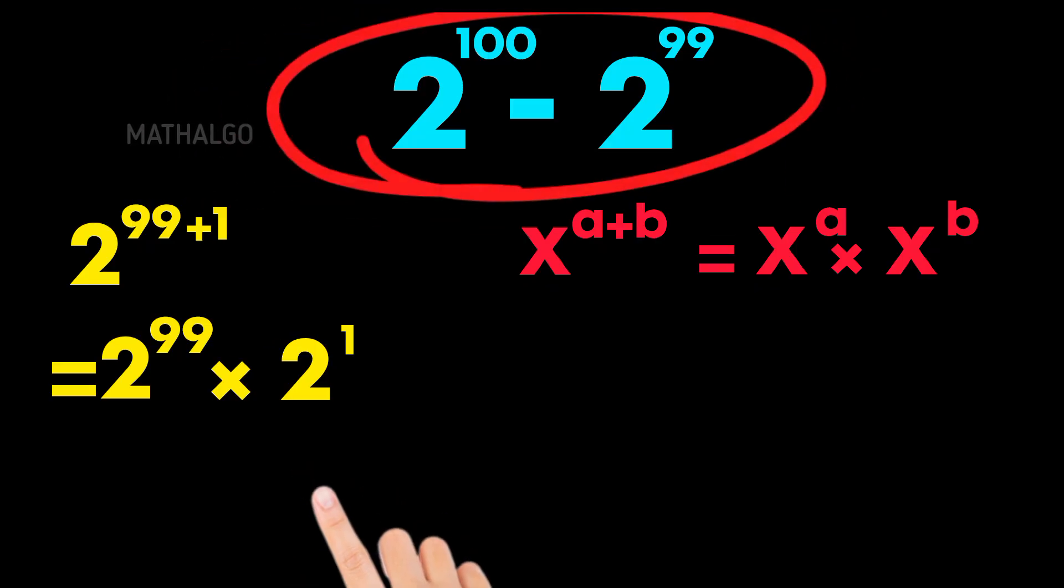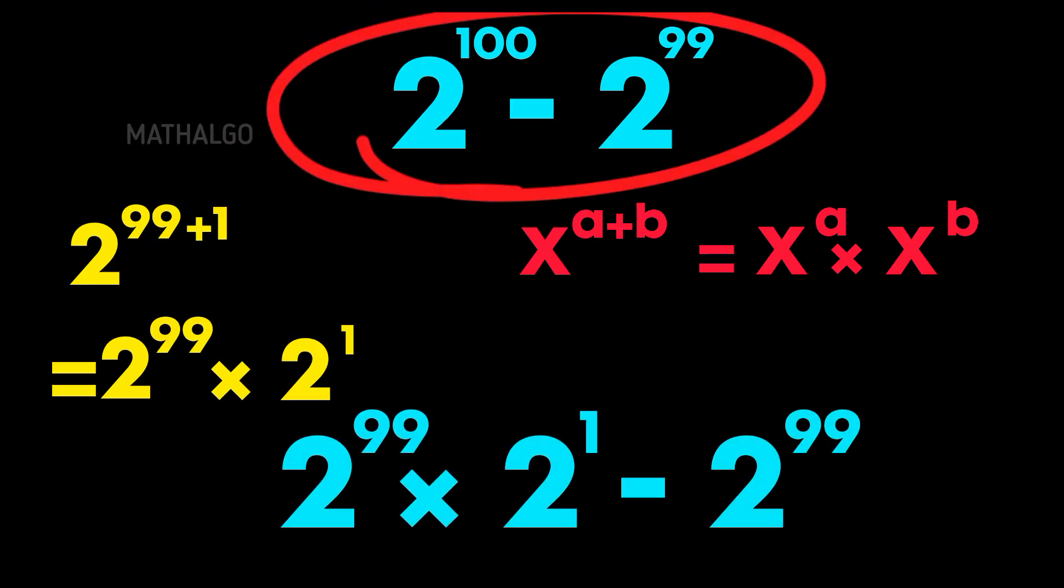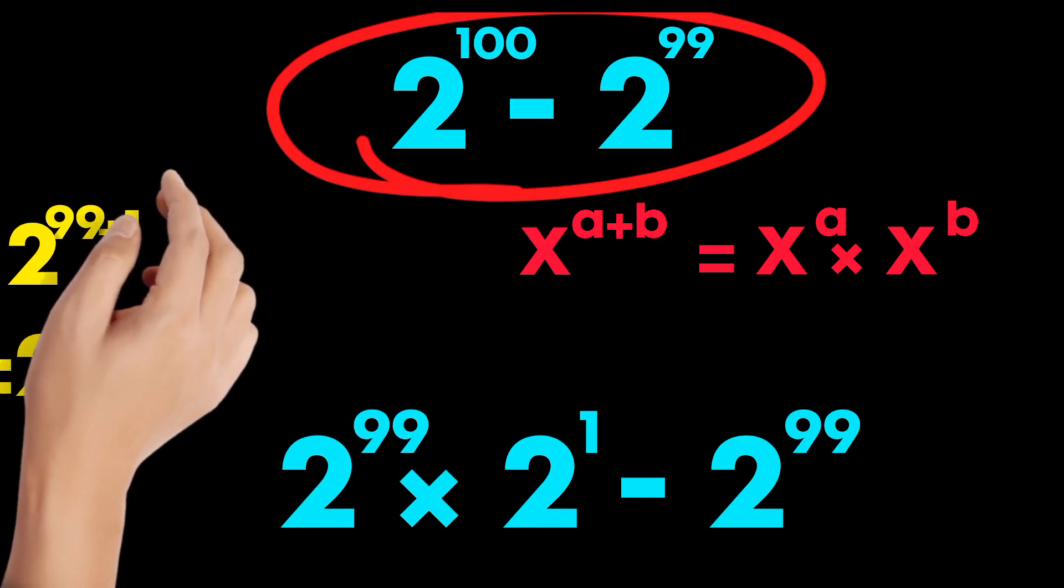That means the expression becomes 2 to the power of 99 times 2 minus 2 to the power of 99.